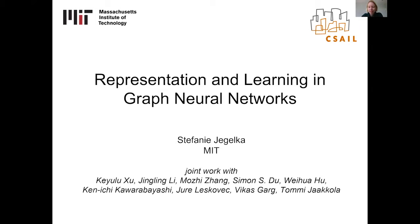Hi everyone, welcome to our EC seminar at UT Austin. Today it's my great pleasure to introduce Stephanie Jagielka from MIT. Stephanie is an associate professor in the department of ECS and a member of CSAIL. Before joining MIT, she was a postdoctoral researcher at UC Berkeley, and she obtained her PhD from ETH Zurich and the Max Planck Institute for Intelligent Systems. Stephanie has received awards including a Sloan Research Fellowship, an NSF Career Award, a DARPA Young Faculty Award, the German Pattern Recognition Award, and a Best Paper Award at ICML. Her research interests span the theory and practice of algorithmic machine learning including discrete and continuous optimization, discrete probability, and learning with structured data. Today she's going to talk about representation and learning in graph neural networks.